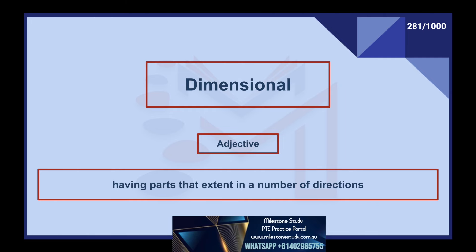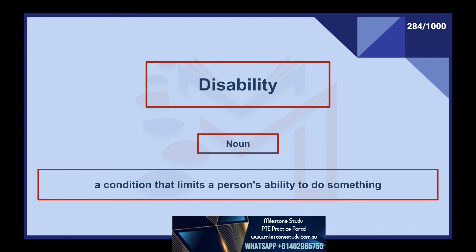Dimensional, adjective: having parts that extend in a number of directions. Dioxide, noun: an oxide containing two oxides per molecule. Directive, noun: formal order from an authority. Disability, noun: a condition that limits a person's ability to do something. Disadvantage, noun: a negative point, a downside, difficulty. Discharge, verb: to release someone or something.